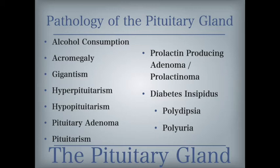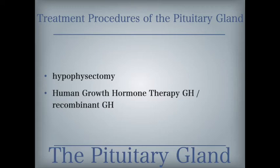Diabetes insipidus is not similar to diabetes mellitus. Treatment procedures of the pituitary gland include a hypophysectomy, which is the use of radiation or surgery to remove all or part of the pituitary gland, and human growth hormone therapy, also known as recombinant GH, a synthetic version of naturally occurring growth hormone administered to stimulate growth when the natural supply is insufficient for normal development.